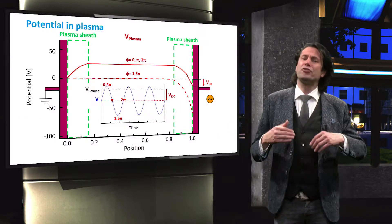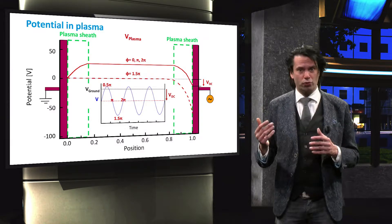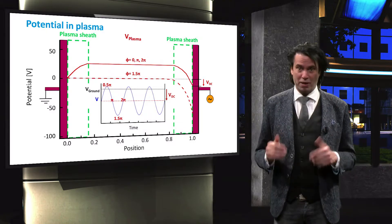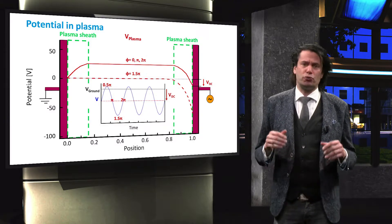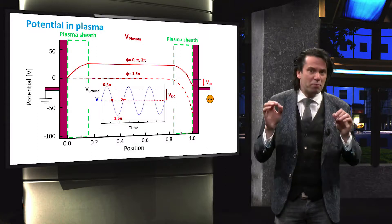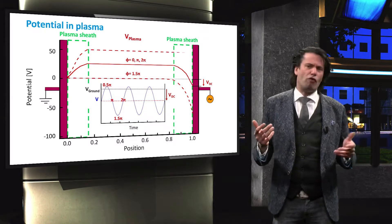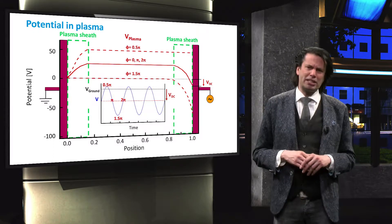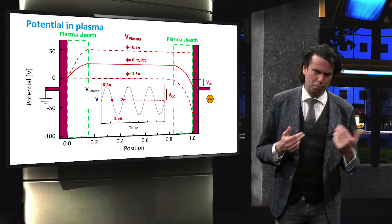This leads to increased ion bombardment at the powered electrode and, as a consequence, the plasma potential is no longer positive with respect to the grounded electrode. Without a potential difference to repel electrons, the grounded electrode will once again be primarily bombarded by electrons. At a phase shift of half pi, the potential at the powered electrode is maximal and there is no potential difference between the plasma and the powered electrode.